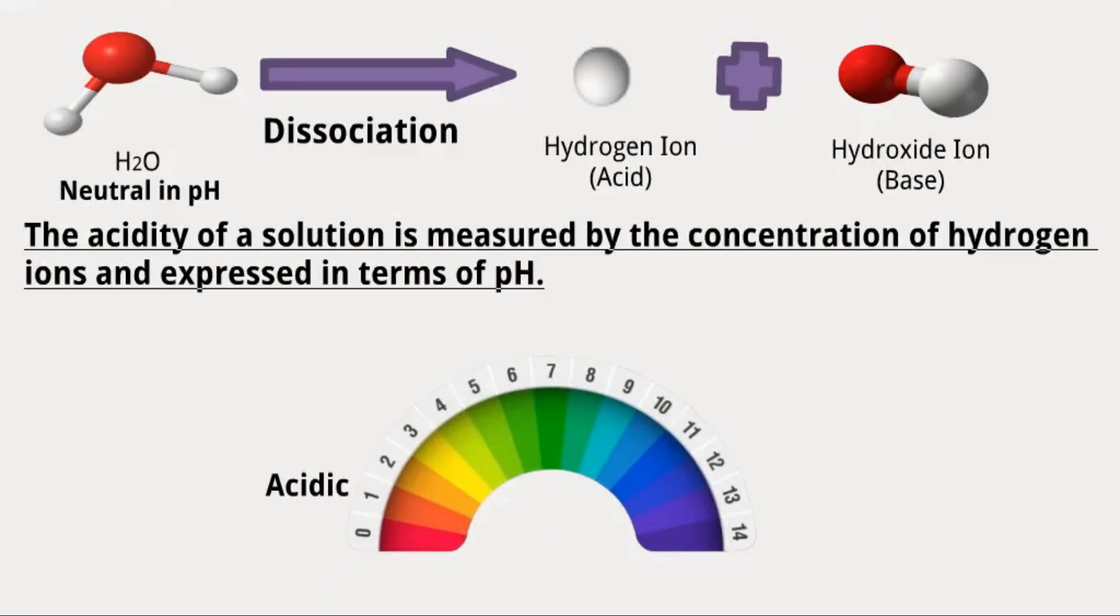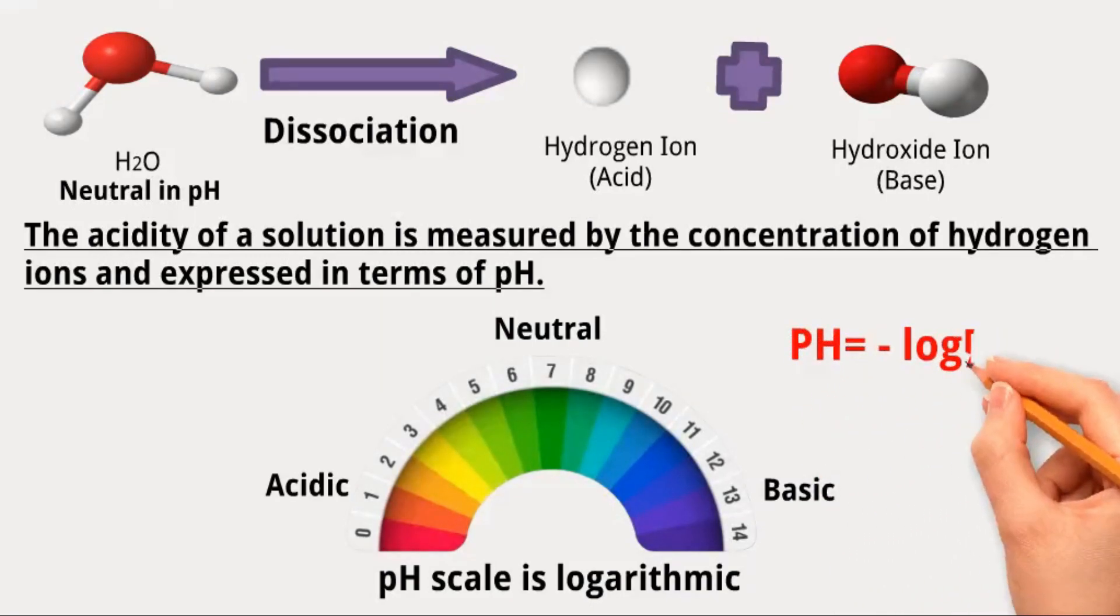A pH of 7 is considered neutral. A pH greater than 7 indicates a basic, or alkaline solution. The most important point to notice is that the pH scale is logarithmic. In this case, pH equals the negative log of the molar concentration of hydrogen ions.